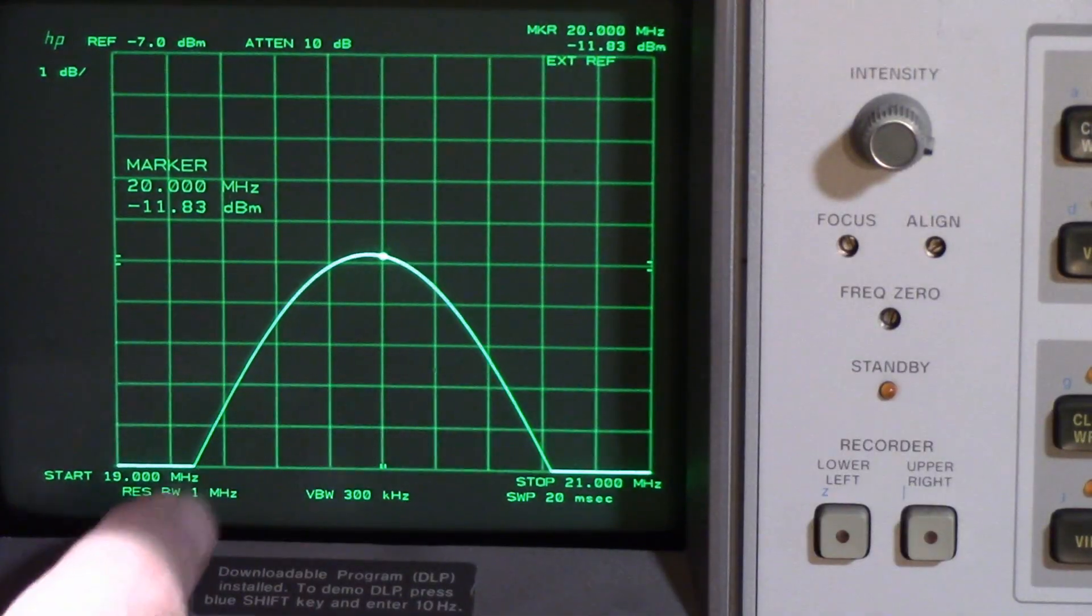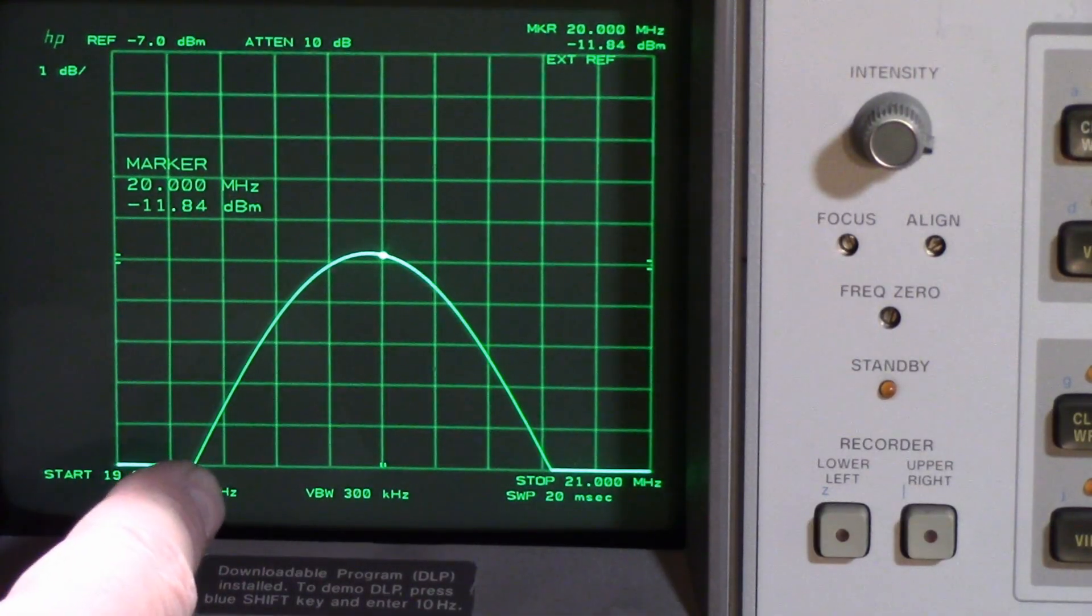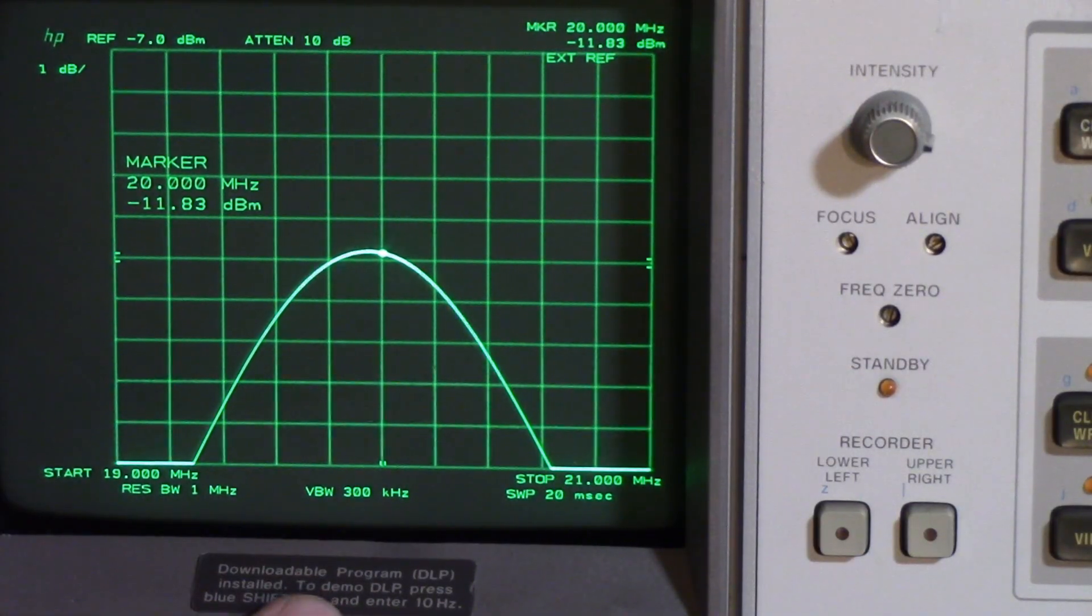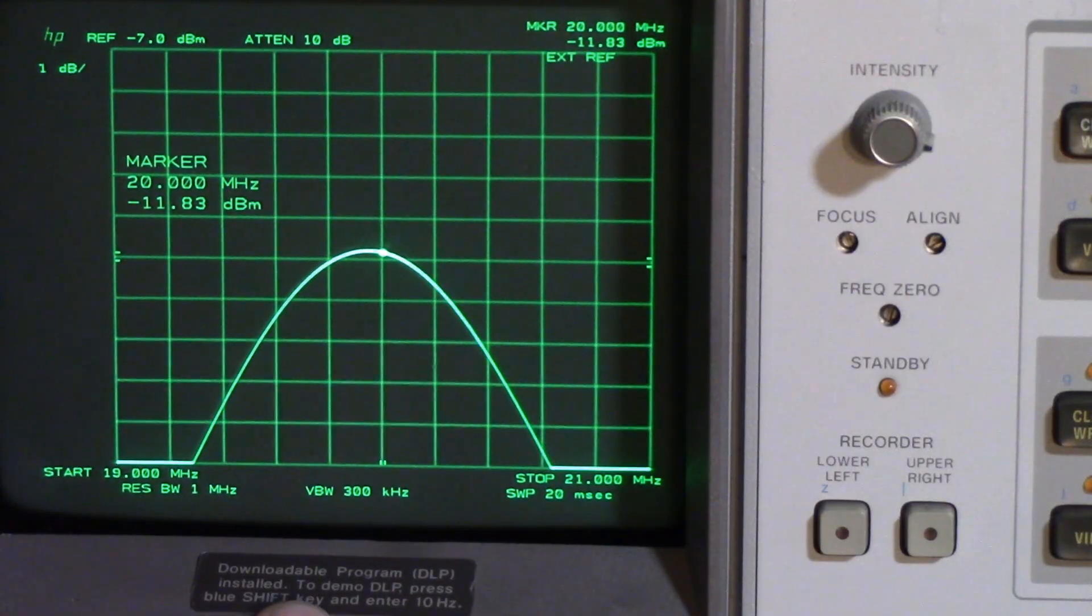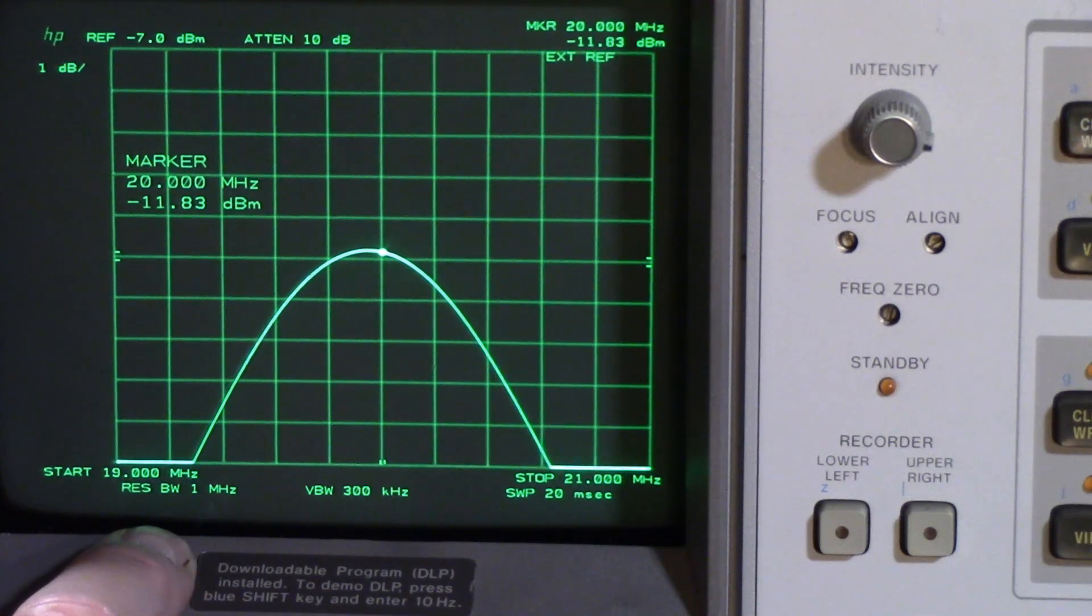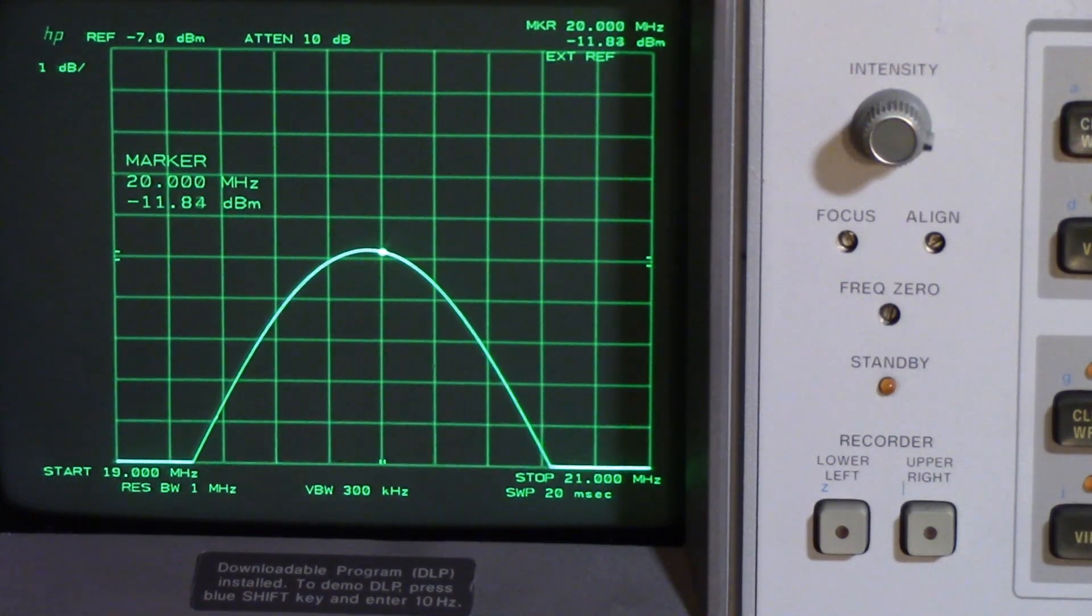And it's supposed to have a center frequency of 20 megahertz. SP of 2 megahertz. I'm not sure what SP is. RB 1 megahertz. Let's see, yeah, resolution bandwidth. Okay. And RL minus 7 dBm. And marker normal.